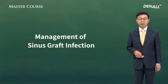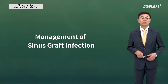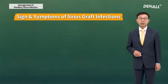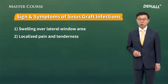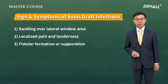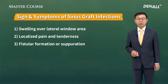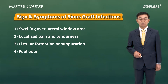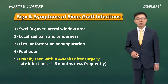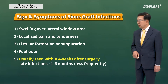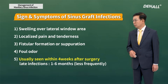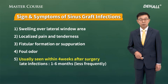If there is sinus infection, how should we manage it? After sinus graft, if there is infection, the most frequent symptom is swelling and pain in the lateral window area. If it has been infected for a long time, fistula can be formed or separation can be observed. Sometimes patients complain of foul odor in the surgical site. In general, infection after sinus lift occurs within one month of surgery; however, it can sometimes occur four to six months later. Therefore, when you do lateral approach, you need to do regular checkup — this is very important.